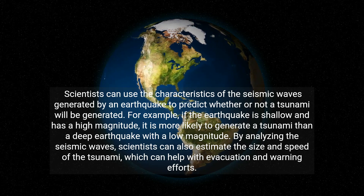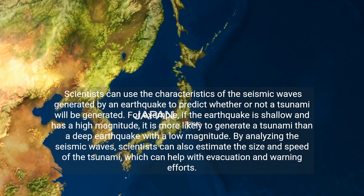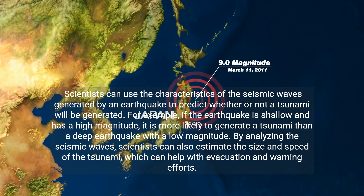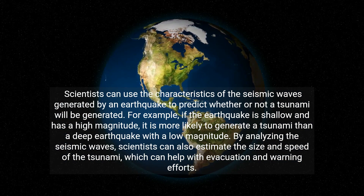Scientists can use the characteristics of the seismic waves generated by an earthquake to predict whether or not a tsunami will be generated. For example, if the earthquake is shallow and has a high magnitude, it is more likely to generate a tsunami than a deep earthquake with a low magnitude. By analyzing the seismic waves, scientists can also estimate the size and speed of the tsunami, which can help with evacuation and warning efforts.